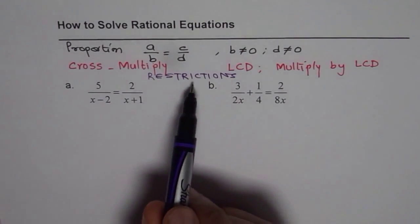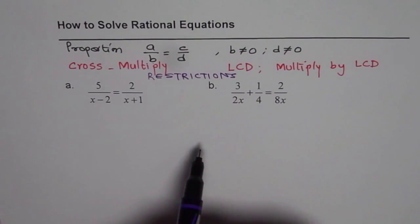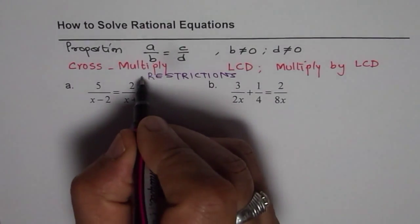If you write restrictions in the beginning, check answer with restrictions. That is what I am trying to suggest. So these two are my suggestions to solve rational equations.